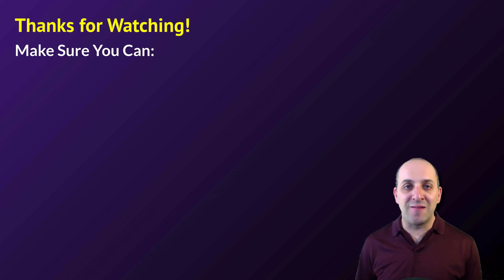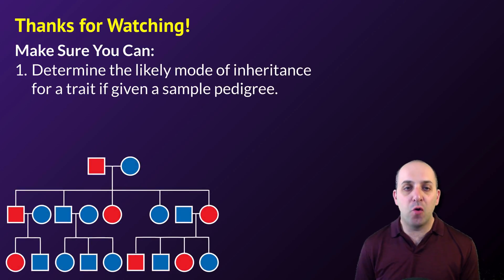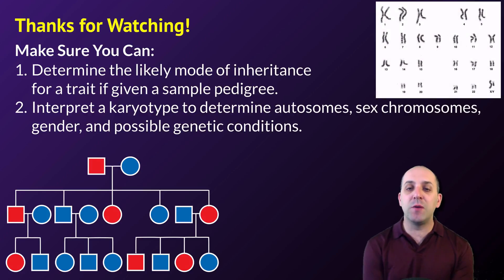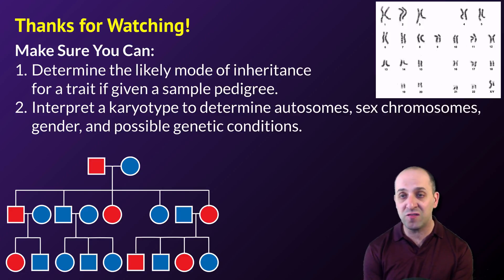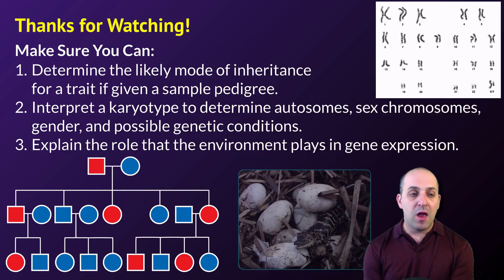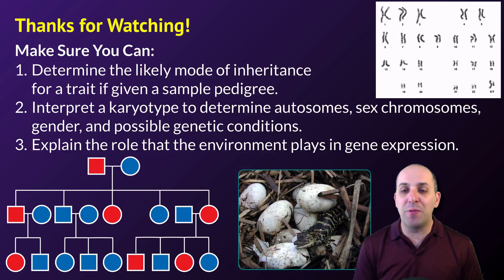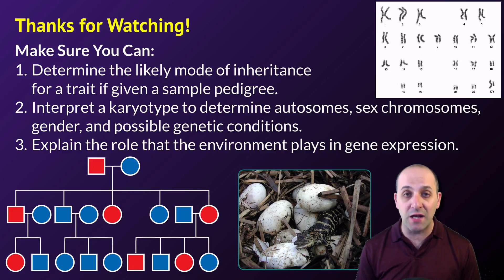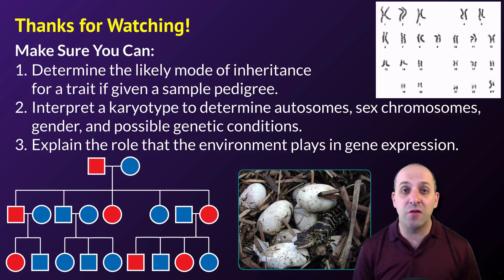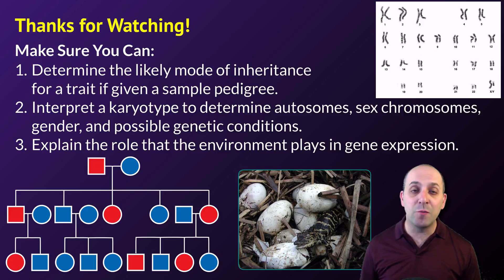Thanks so much for watching this video on inheritance. Make sure you can do the following: determine the likely mode of inheritance for a trait given a pedigree; interpret a karyotype to determine autosomes, sex chromosomes, gender, and possible genetic conditions; and explain the role the environment plays in contributing to gene expression. If you can do all those things, you're doing great. If not, that's okay — take a moment and write down any questions you have so you can get the answers you need. Thanks so much for watching, and have a great day.